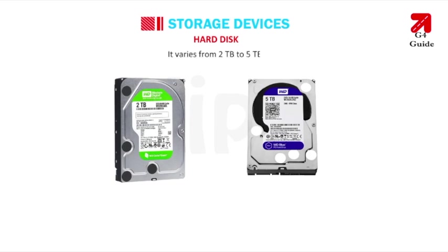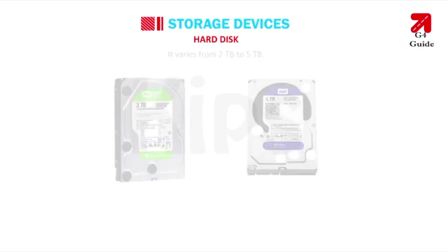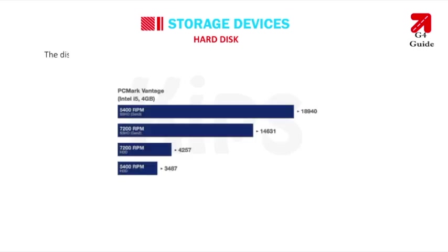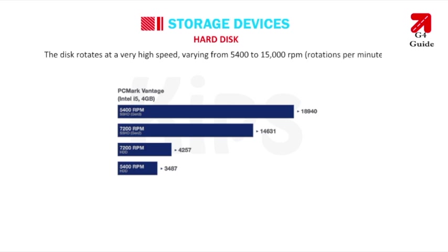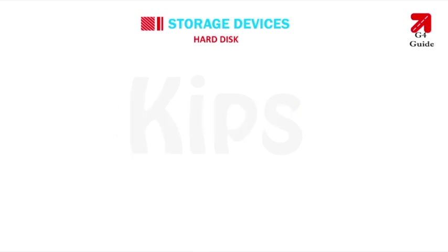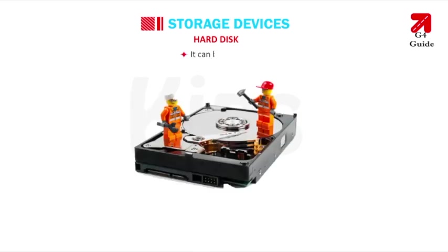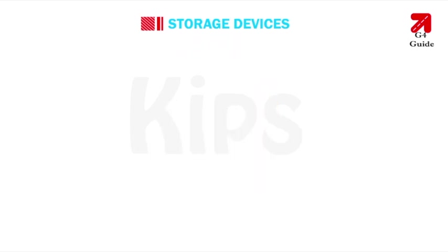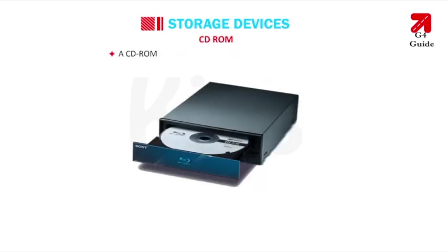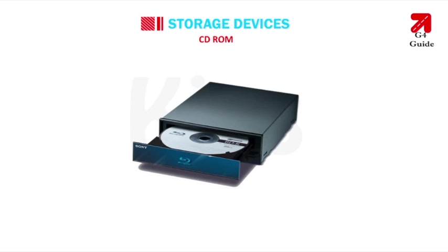The hard disk is coated with magnetic material. It is hard and inflexible, and has large storage capacity varying from 2 TB to 5 TB. The disk rotates at a very high speed, varying from 5,400 to 15,000 RPM — rotations per minute. It can be reused.